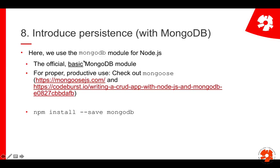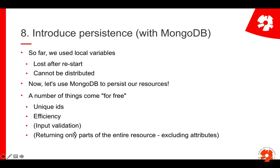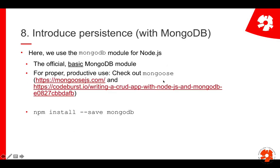We'll use the official MongoDB module for Node.js. It's very basic and allows you to do all the different things. If you want to use MongoDB in production, I would check out Mongoose, which is a module on top of MongoDB that allows you to do a lot of things efficiently — for example, input validation. That's strongly recommended.